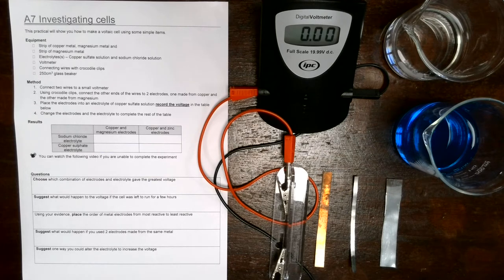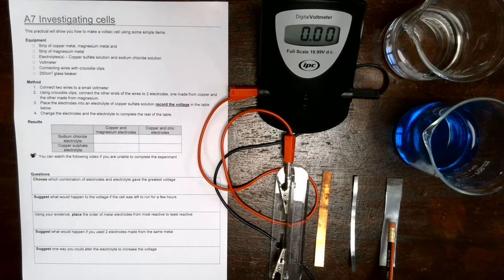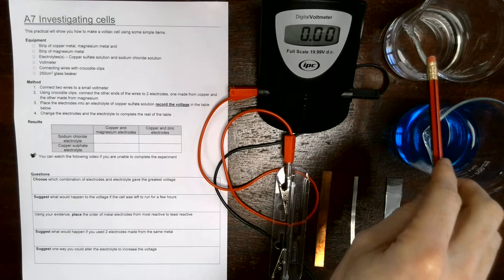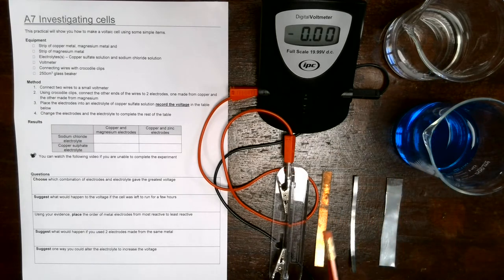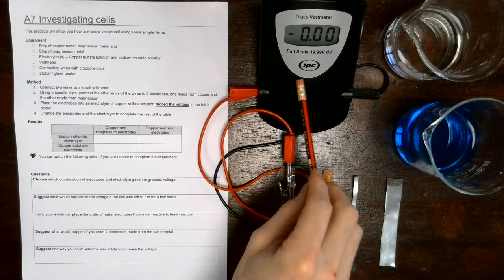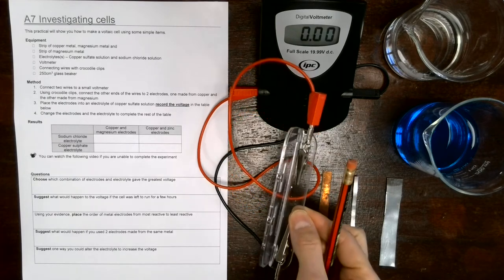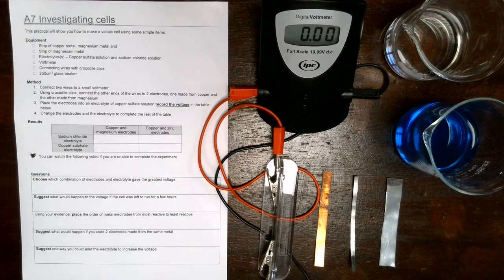We're going to use three different metals. I've got some copper here, we've got some magnesium, and we've got some zinc. I've got two different electrolytes in these beakers: sodium chloride solution and copper sulfate solution. I've got a digital voltmeter which is connected with two wires to some crocodile clips and a holder which you're going to use to connect the electrodes.